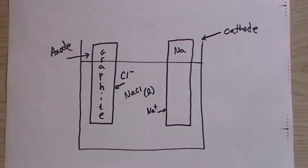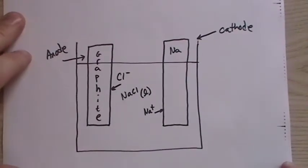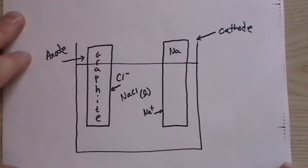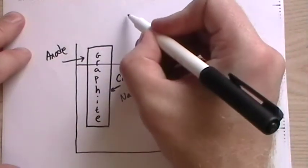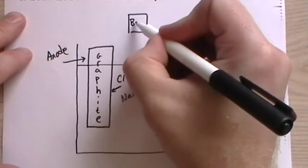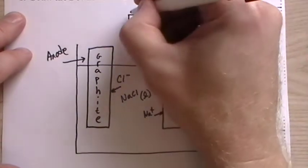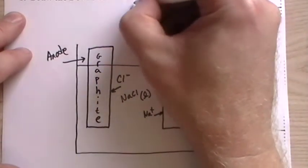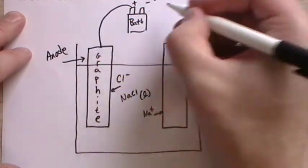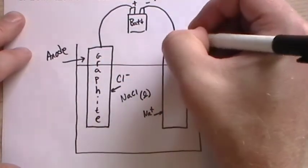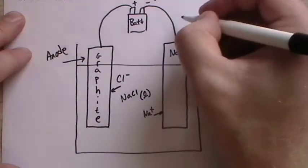Because it has to be something that can withstand the heat involved. And graphite is the catalytic electrode that we use. Now this all hooks up to, we have a battery. And it has a plus side and a minus side. And the plus side is connected to the graphite and the negative side to the sodium.